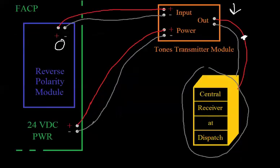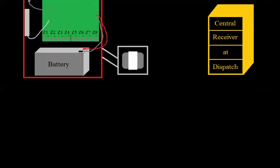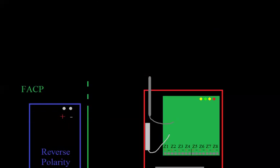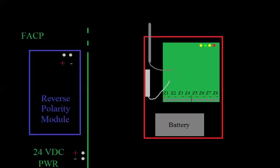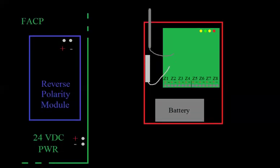Well, zones 5, 6, 7, and 8 on this radio can use a reverse polarity input. So you can have that same setup that you had for your tones transmitter module, just get rid of your tones transmitter module, and now wire this up to those zones. So I can take this reverse polarity module and go to zone 5.